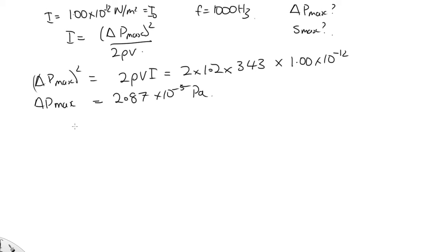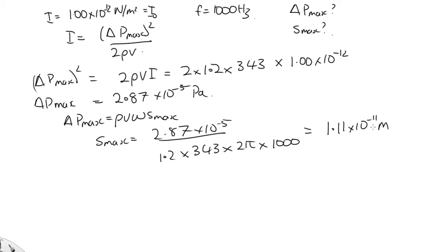And S max, to relate the pressure and the displacement, we can use P max is equal to rho V omega S max. So S max is equal to 2.87 times 10 to the minus 5. The density, 1.2 times the speed, 343, times the angular frequency, 2 pi times 1,000. Solving that on the calculator, we end up with 1.11 times 10 to the minus 11 meters. A very small displacement, so it's not surprising that we can only just detect that.